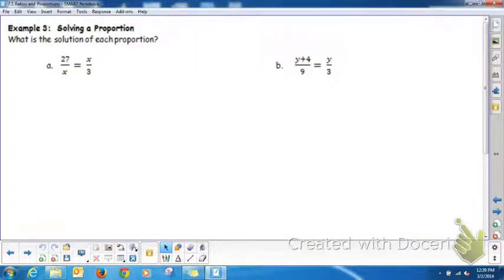So let's solve a proportion using the cross product property. Again, we want to multiply. 3 times 27 is 81. And when we say x times x, we're going to get x squared. How do you undo squared? Yep, square root.